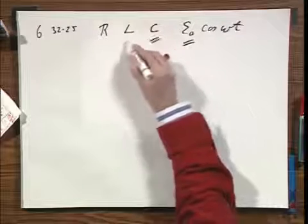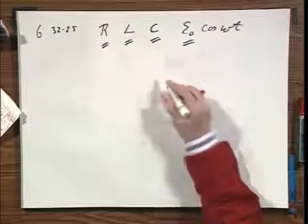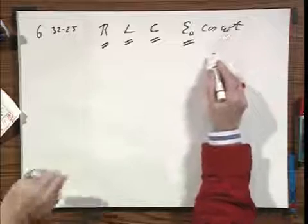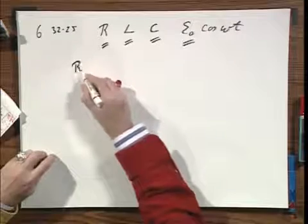We know E zero, we know C, we know L, and we know R. And we are told that this is at resonance.